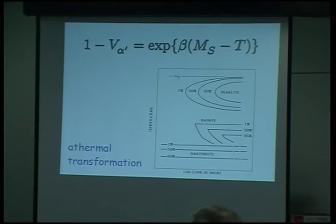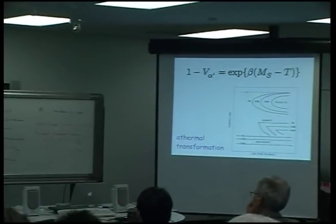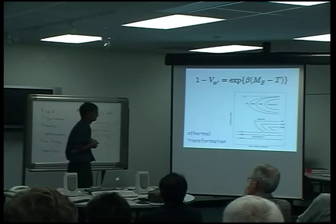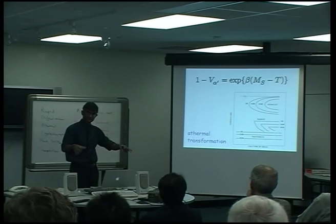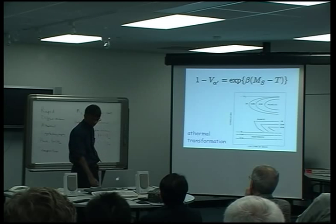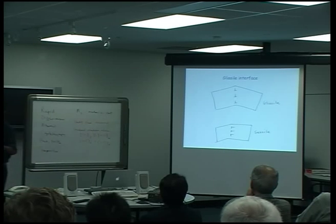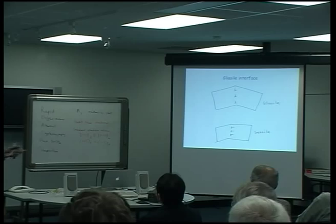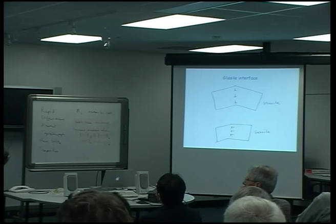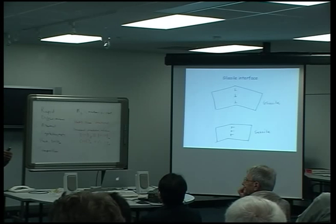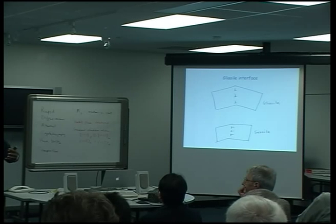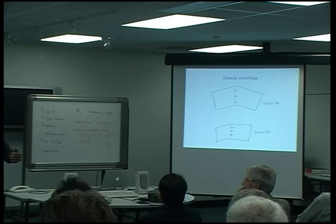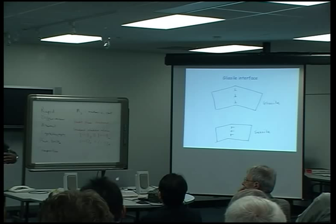It is possible to get isothermal martensitic transformation under certain conditions, but that will be covered in the second lecture. At the moment we are just summarizing all the characteristics of martensite. Now, imagine the interface between martensite and austenite has to move at a thousand meters per second — really, really fast. Then you cannot have any process which is not conservative, meaning no creation of vacancies or interstitials, and no climb of dislocations.